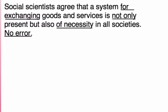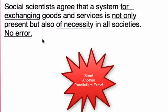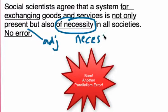Homestretch. Social scientists agree that a system for exchanging goods and services is not only present but also of necessity in all schools. It is a parallelism error. After 'not only' we have the adjective 'present,' but after 'but also' we have the prepositional phrase 'of necessity.' We need the adjective 'necessary' so it reads: 'not only present but also necessary.'